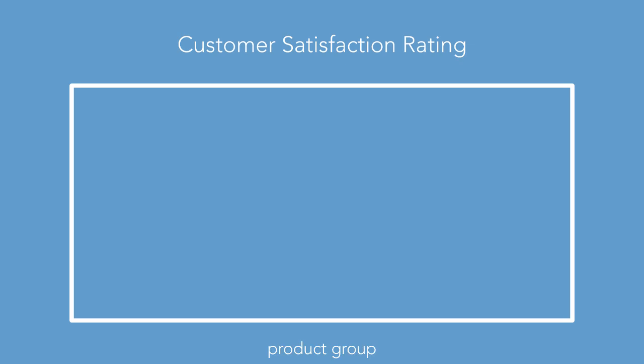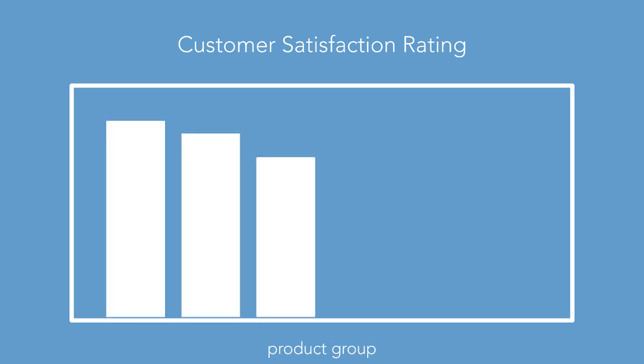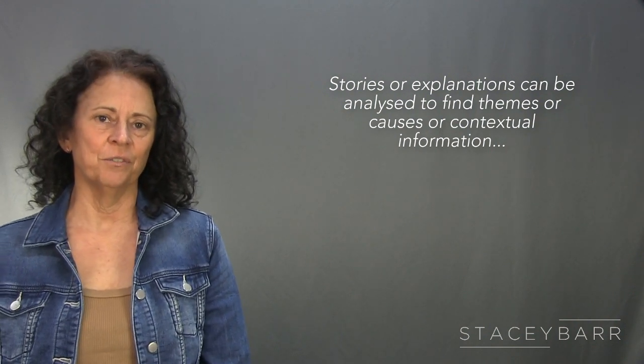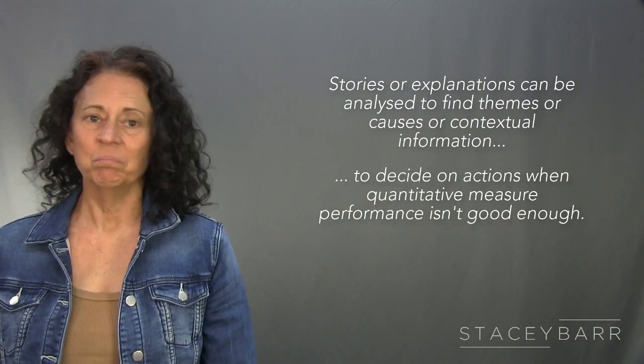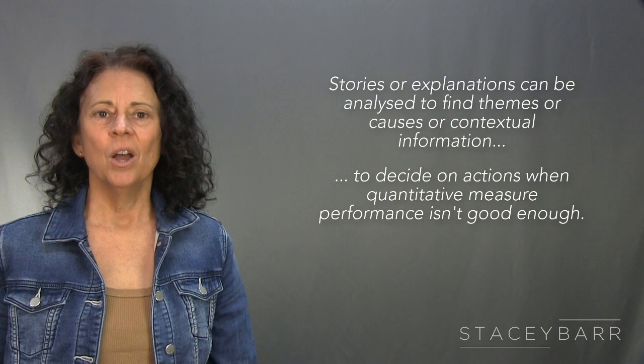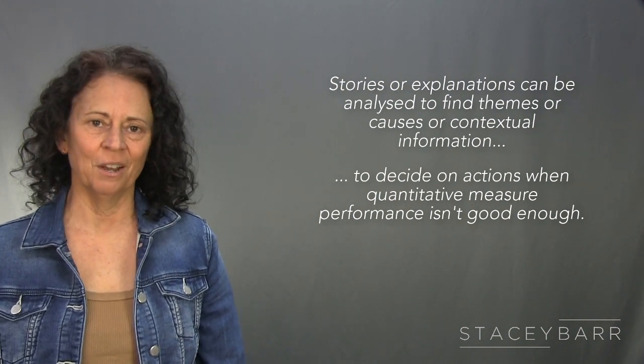Take, for example, customer satisfaction rating. We can slice it into product groups to explore which products have the lowest satisfaction and should be priorities for improvement. Qualitative data can also be richer than just attribute classifications. Stories, explanations — that's qualitative data. And that kind of data can be analyzed to find themes, to find causes, or some further contextual information to help us decide what kind of actions to take when our quantitative measures tell us that performance isn't good enough.